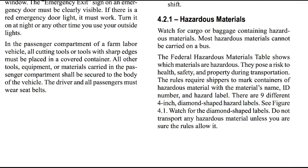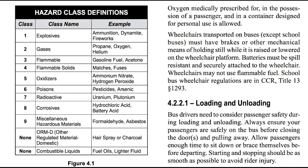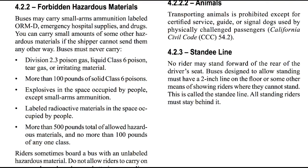Hazardous Materials: Watch for cargo or baggage containing hazardous materials. Most hazardous materials cannot be carried on a bus. The Federal Hazardous Materials Table shows which materials are hazardous. They pose a risk to health, safety, and property during transportation. Shippers are required to mark containers of hazardous materials with the material's name, ID number, and hazard label. There are nine different 4-inch diamond-shaped hazard labels — see figure 4.1. Do not transport any hazardous materials unless you are sure the rules allow it. Buses may carry small arms ammunition labeled ORM-D, emergency hospital supplies and drugs. You can carry small amounts of some other hazardous materials if the shipper cannot send them any other way.